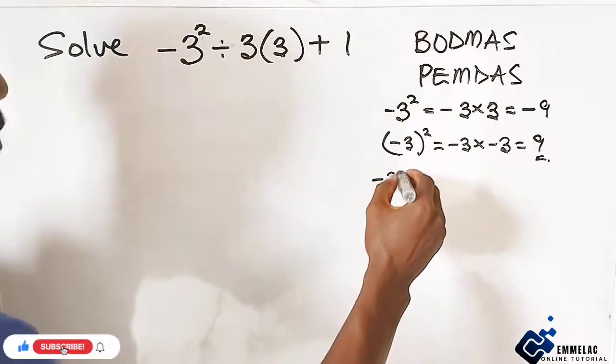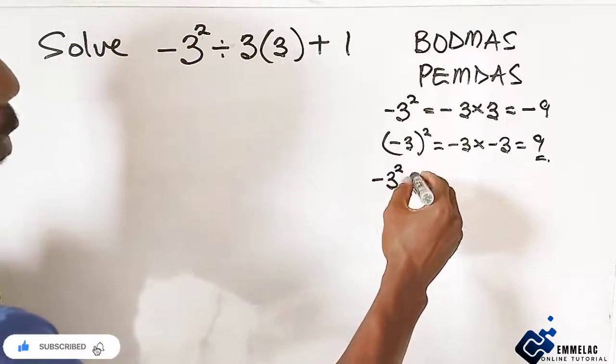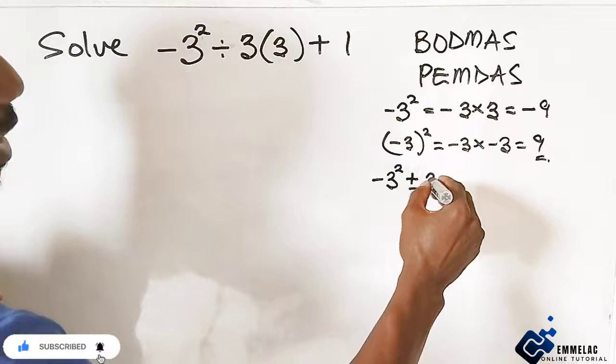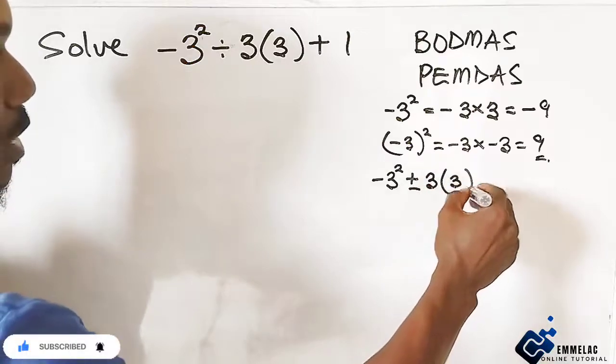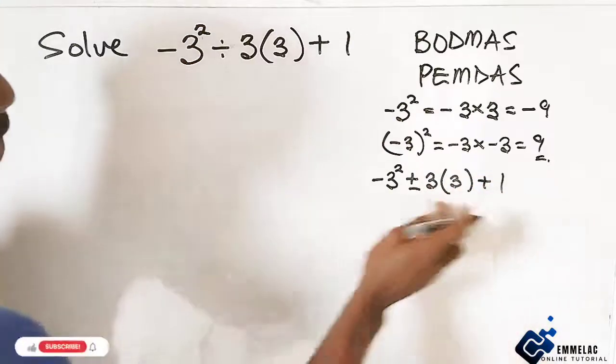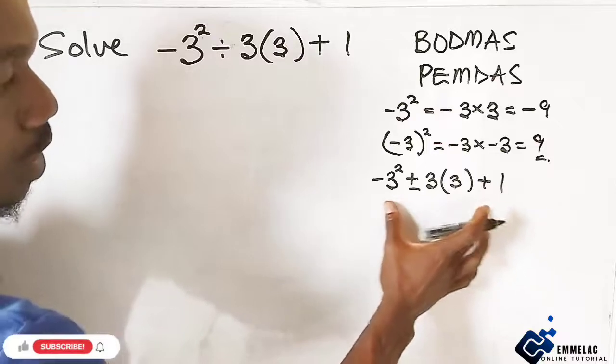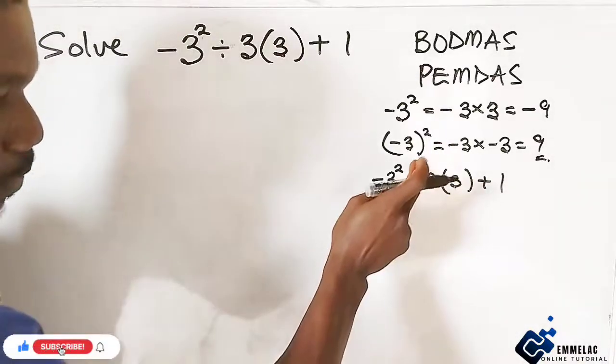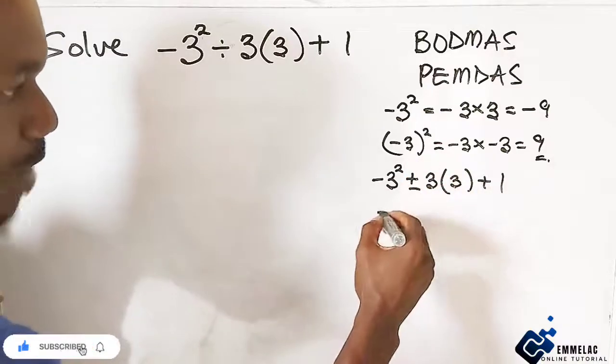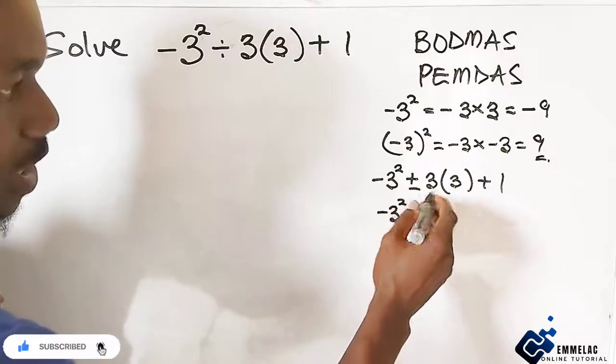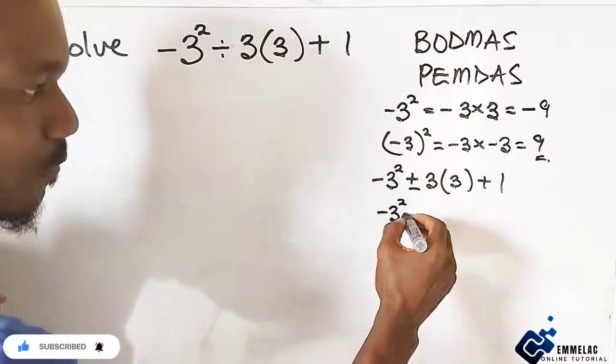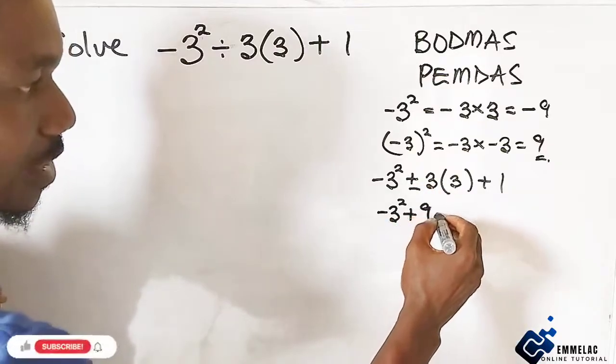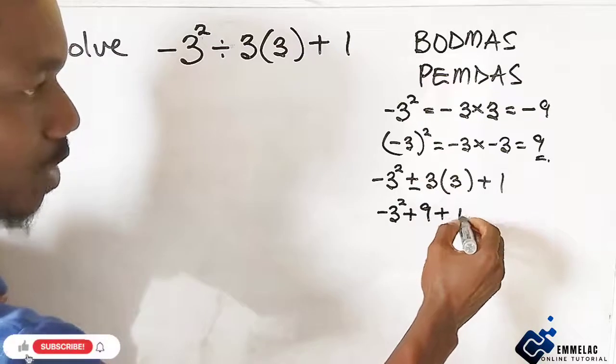So here we have, let's say -3 raised to the power of 2. Now let's say plus or minus 3, 3. Now this is just a case of two cases here. Now for the first one, it is plus. Now we can have -3 raised to the power of 2. Now because this is a plus sign, here we have +9 + 1.